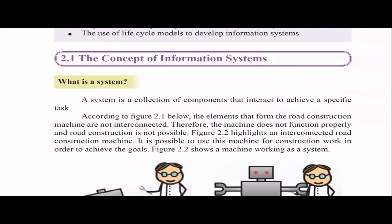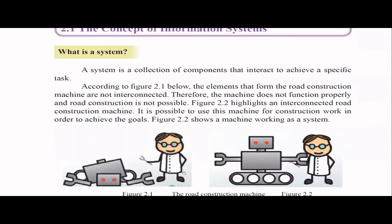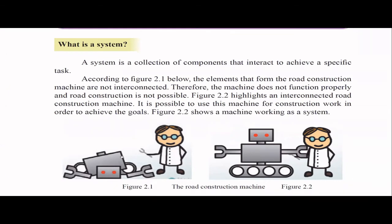In the textbook, there are two figures. The first shows a road construction machine where the components are not properly connected — it won't achieve the task. In the second picture, all the interconnected components are there, so the machine can be used for construction work. In this second case, the machine is working as a system.